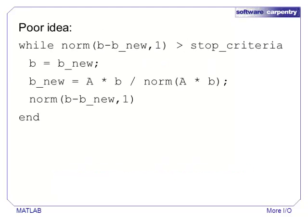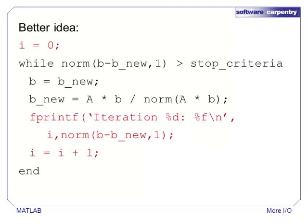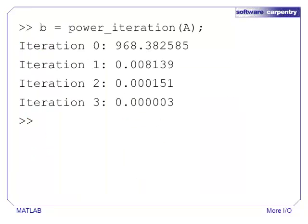One way to monitor the calculation is to compute the stopping criteria and leave off the semicolon. This is not a good idea because it prints four lines per iteration. If we need to print several status variables per iteration, the output is both long and hard to read. A better strategy is to utilize the fprintf function, which prints formatted text to a file or to the standard output stream. Clearly, this output is cleaner and shorter than it would be if we had just left off a semicolon.